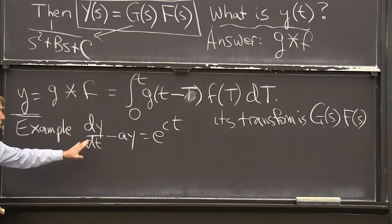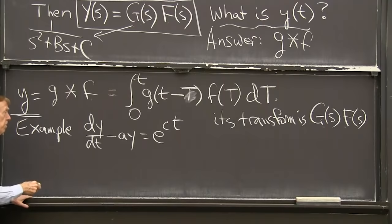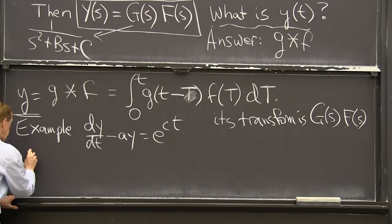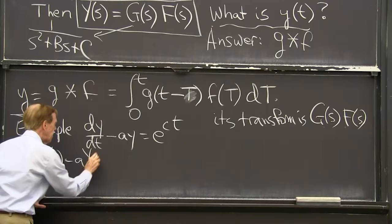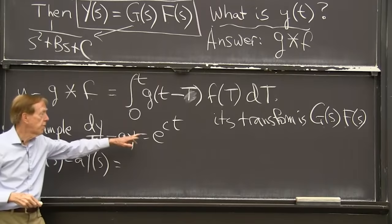I'm doing those because I can take the transforms and check everything. So let me transform both of those starting from 0. So the transform of that is sy(s) minus ay(s) equals.